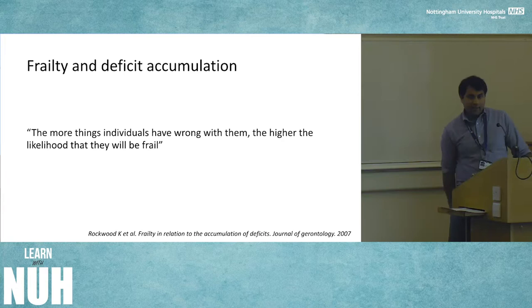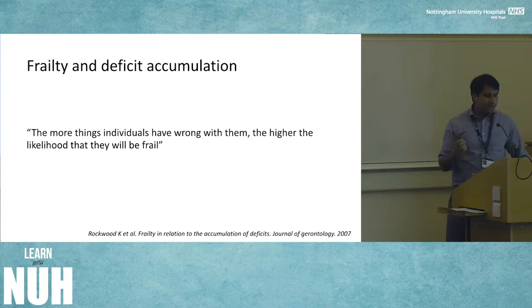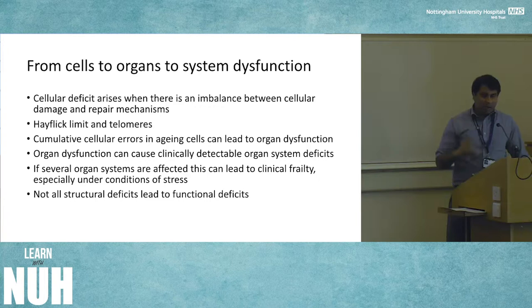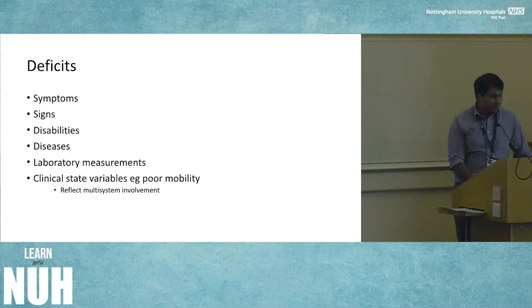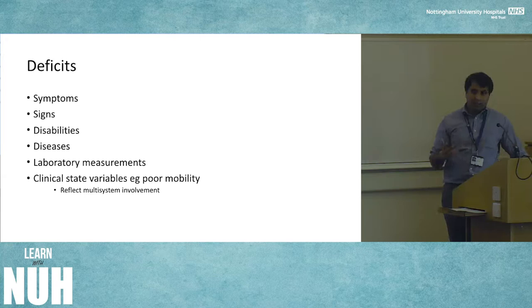The accumulation deficit model from Ken Rockwood is conceptually simple: the more things individuals have wrong with them, the higher the likelihood that they'll be frail. It's grounded in cellular theoretical modelling looking at accumulation of cellular deficits leading to organ dysfunction, then systems dysfunction, leaving an individual with frailty. A deficit can be a symptom, a sign, a disability, a disease, a lab measurement, or a state reflecting multi-system involvement such as poor mobility.